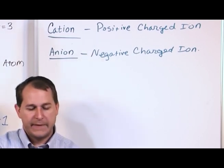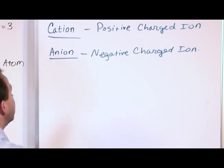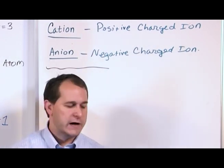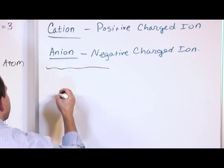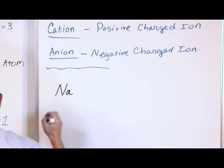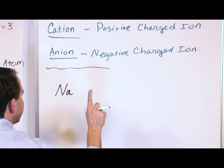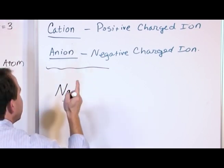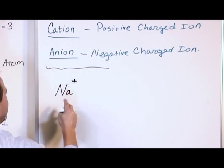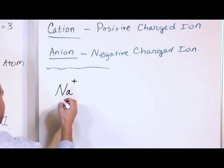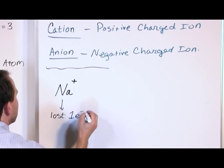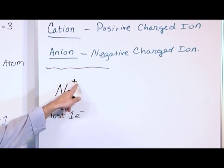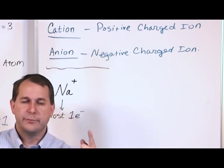Let's look at how we write these ions down. If sodium — chemical symbol Na — loses one electron, it had a balanced neutral atom. After losing one electron, it has a net positive one charge, so we write it as Na⁺. We just put a plus up there; we don't have to write the number one because a single plus implies a charge of one. The plus designates that it's positively charged with one unit of charge.